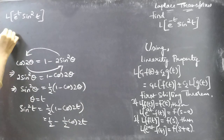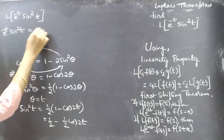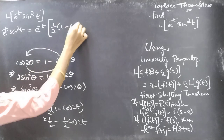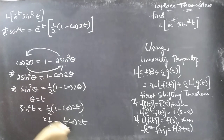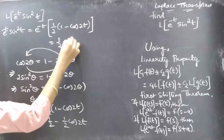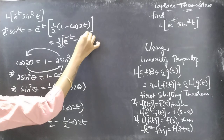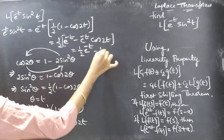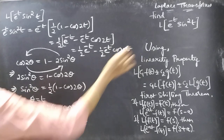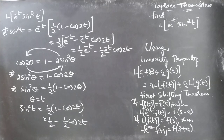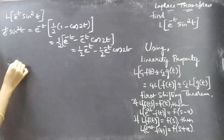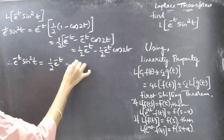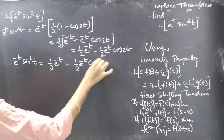Now consider e to the power minus t into sine squared t. This equals e to the power minus t into 1 by 2 minus 1 by 2 cos 2t, which gives us 1 by 2 e to the power minus t minus 1 by 2 e to the power minus t cos 2t.